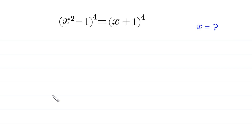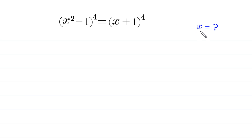Hello, welcome to how to solve this very nice algebra equation: (x² - 1)⁴ = (x + 1)⁴. We need to find all possible values of x.